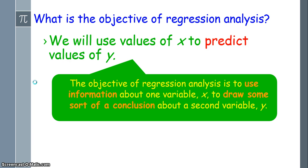Alright, why do we have regression analysis? Why do regression lines exist? The objective of regression analysis is to use the information about one variable x to draw some sort of a conclusion about the second variable y. Basically, if we know two variables have a relationship, it would be really easy if we could predict the value of the dependent variable based on the value of the independent variable.